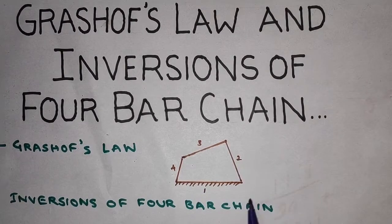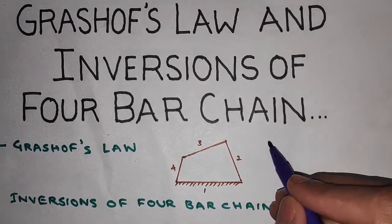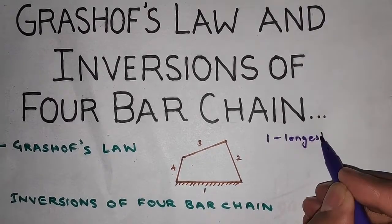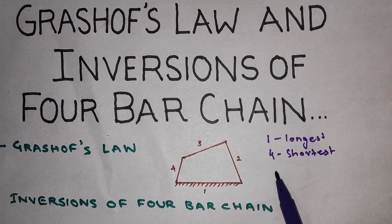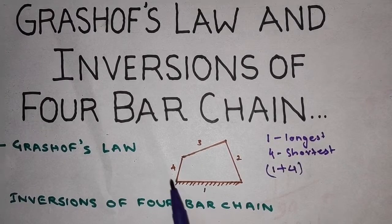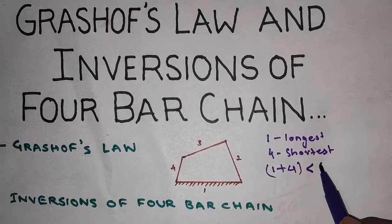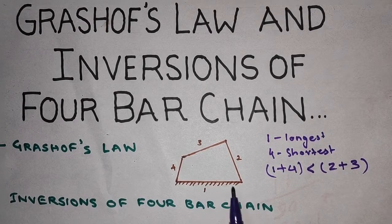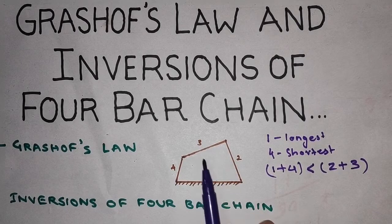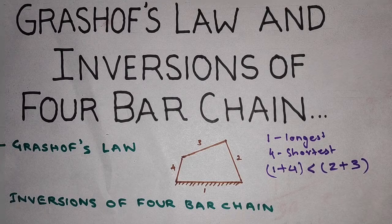If you see, we have a 4-bar mechanism with link number 1, 2, 3, and 4. Link 1 is fixed. Link number 1 is the longest and link number 4 is the shortest. As per Grashof's law, the length of link 1 plus link 4 — the sum of the shortest and longest links — should not be greater than the sum of the remaining links, that is link number 2 and link number 3. This condition is required for continuous relative motion to be maintained between the two links.